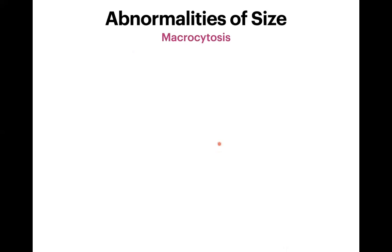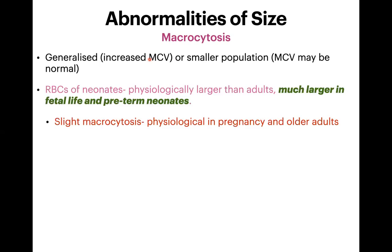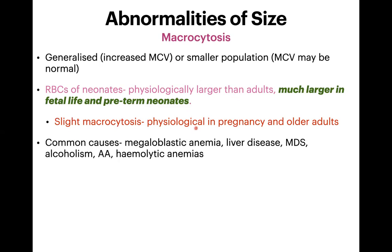The next size abnormality is macrocytosis. Like microcytosis, it can be generalized — in which case MCV will be increased — or confined to a smaller population, in which case MCV may be normal. RBCs of neonates are physiologically larger than adults and much larger in fetal life and preterm neonates. A slight macrocytosis is also physiological in pregnancy and older adults. Common causes of macrocytosis include megaloblastic anemia, liver disease, myelodysplastic syndrome, alcoholism, aplastic anemia, and hemolytic anemia.